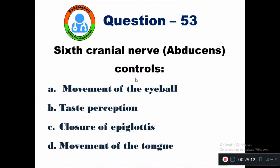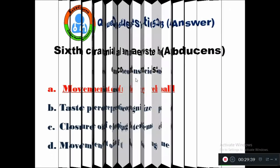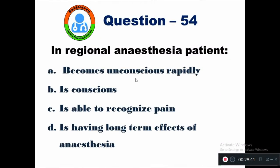Question 53: The sixth cranial nerve — abducens nerve — controls — option A movement of the eyeball, B taste perception, C closure of epiglottis, D movement of tongue. The sixth cranial nerve mainly controls the movement of the eyeball. Option A is the right answer.